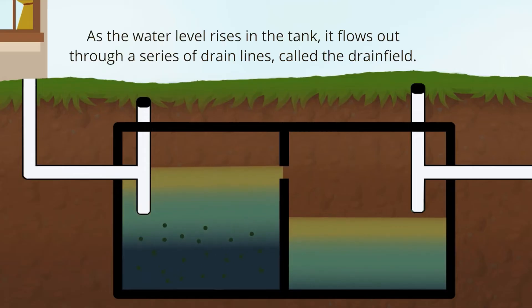As the water level rises in the tank, it flows out through a series of drain lines called the drain field.